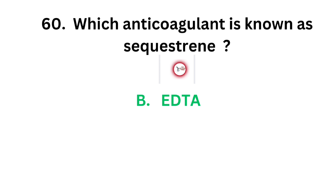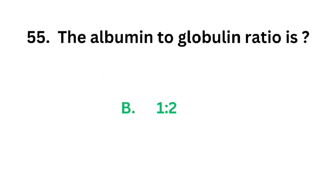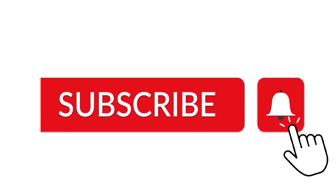Today we are winding up the video. Please make sure that you have studied well. There is a correction in question number 55 — the albumin to globulin ratio is option B, 1 is to 2. Albumin to globulin ratio is 1 is to 2. Please subscribe to the channel.